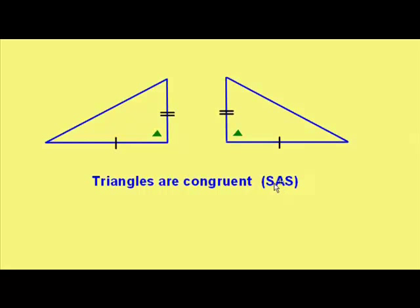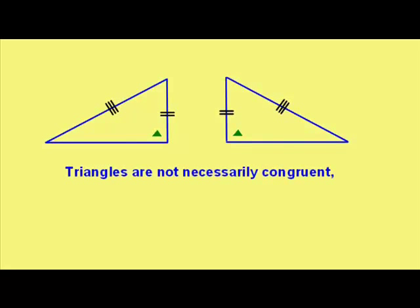It's important with SAS that you have the angle in between the two sides. Now, look at this situation. We've got two pairs of equal sides, but the angle isn't between them. So in that situation, the triangles are not necessarily congruent, unless that angle is a right angle. That does make them congruent.